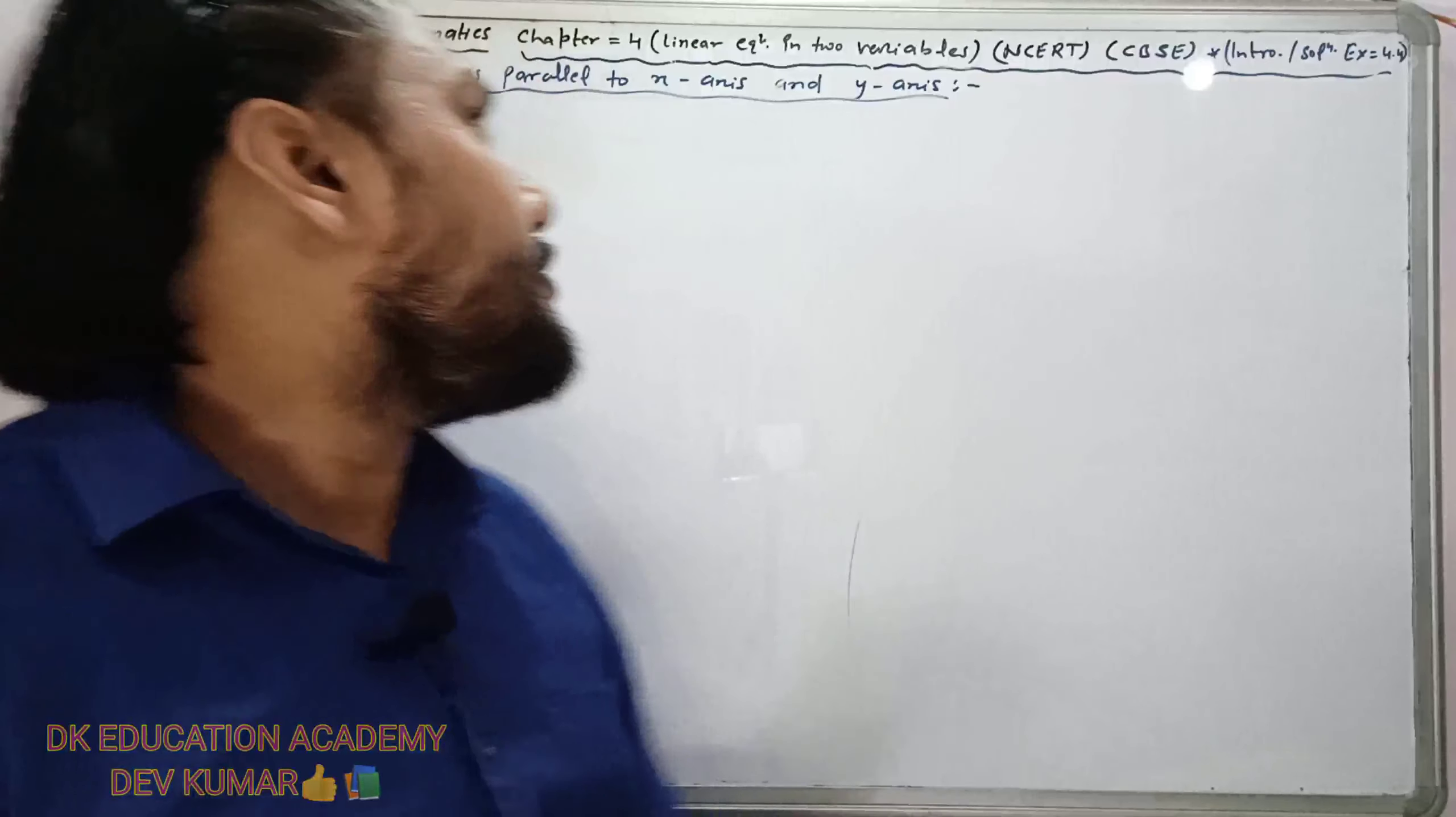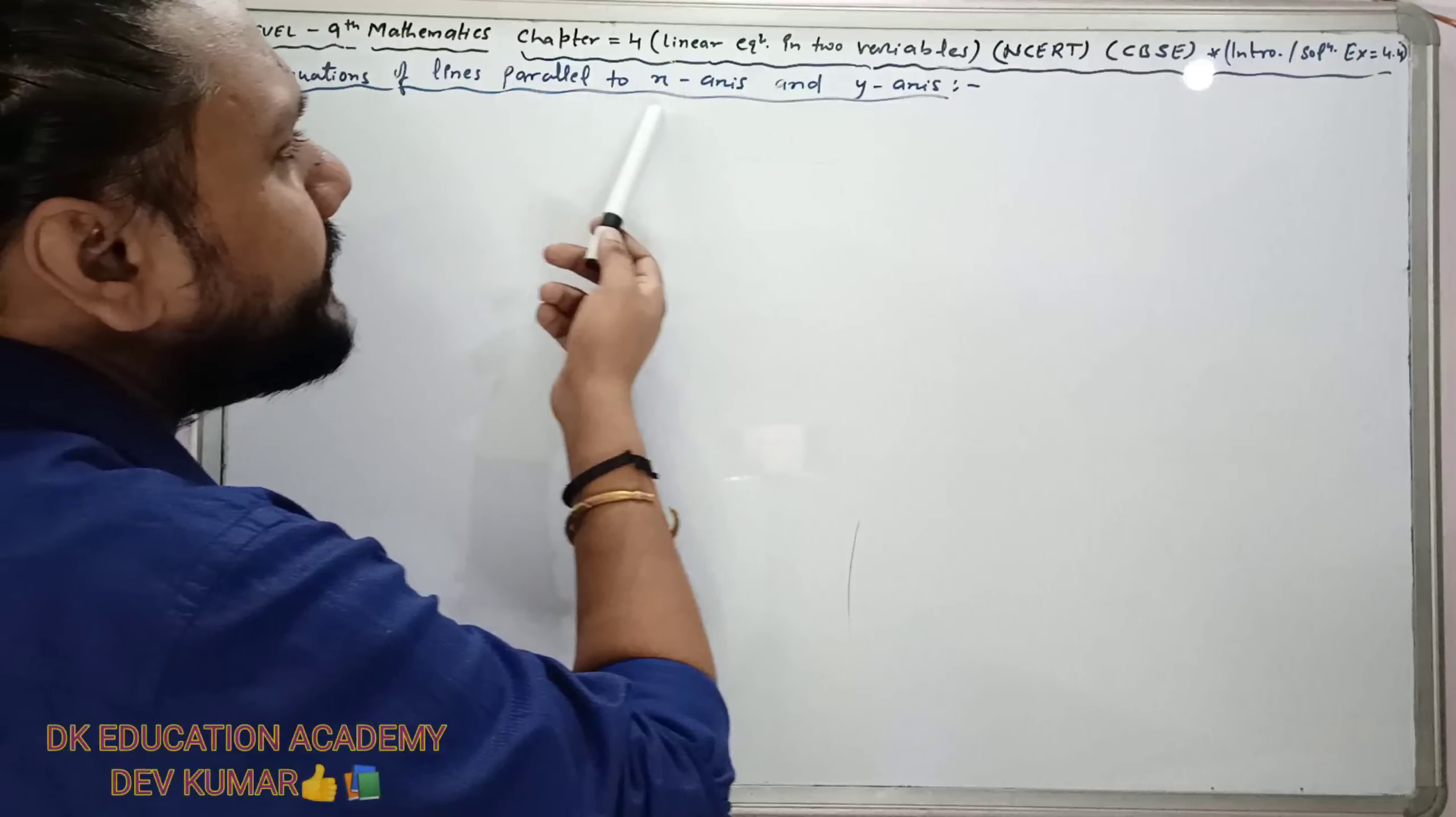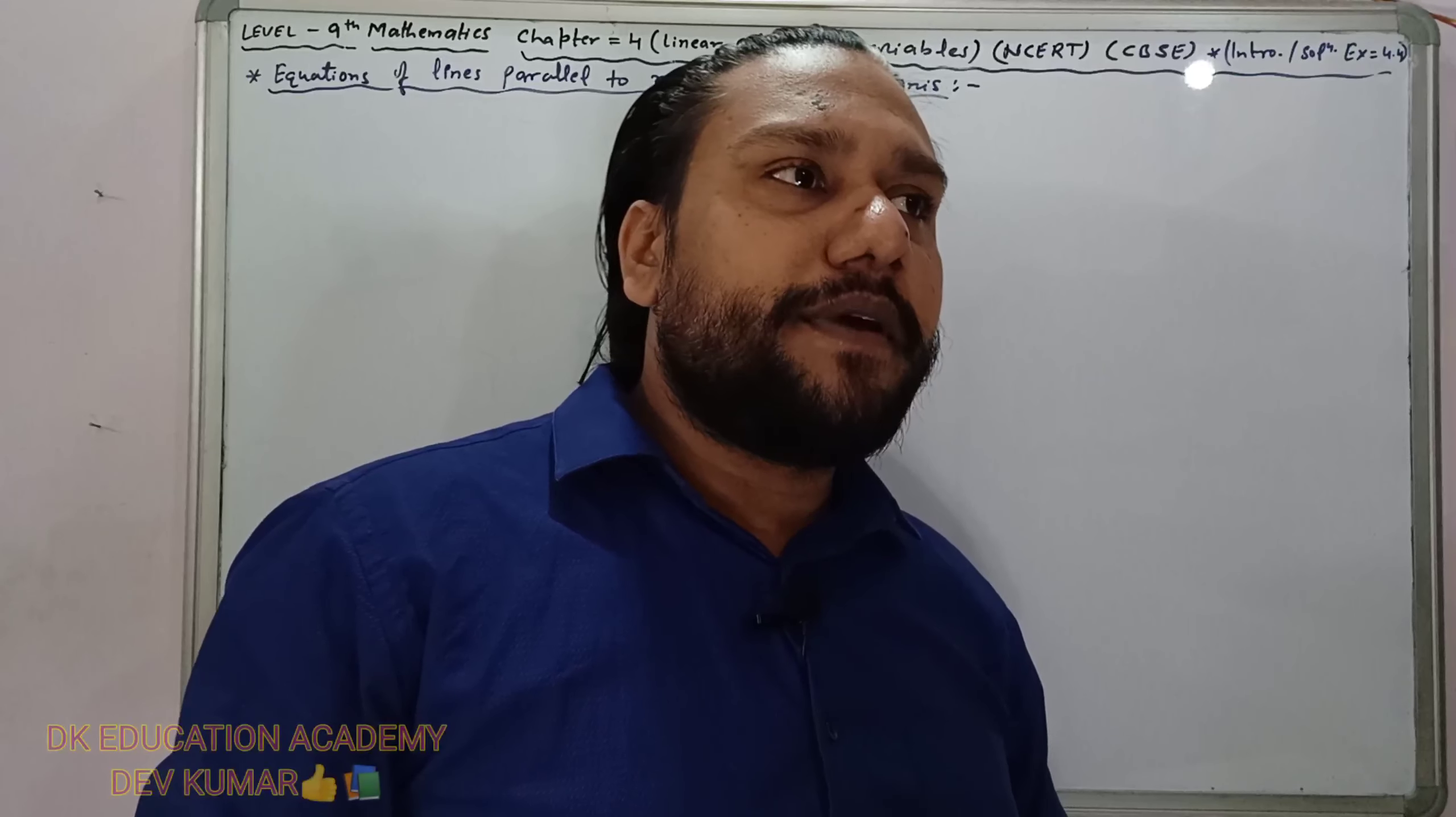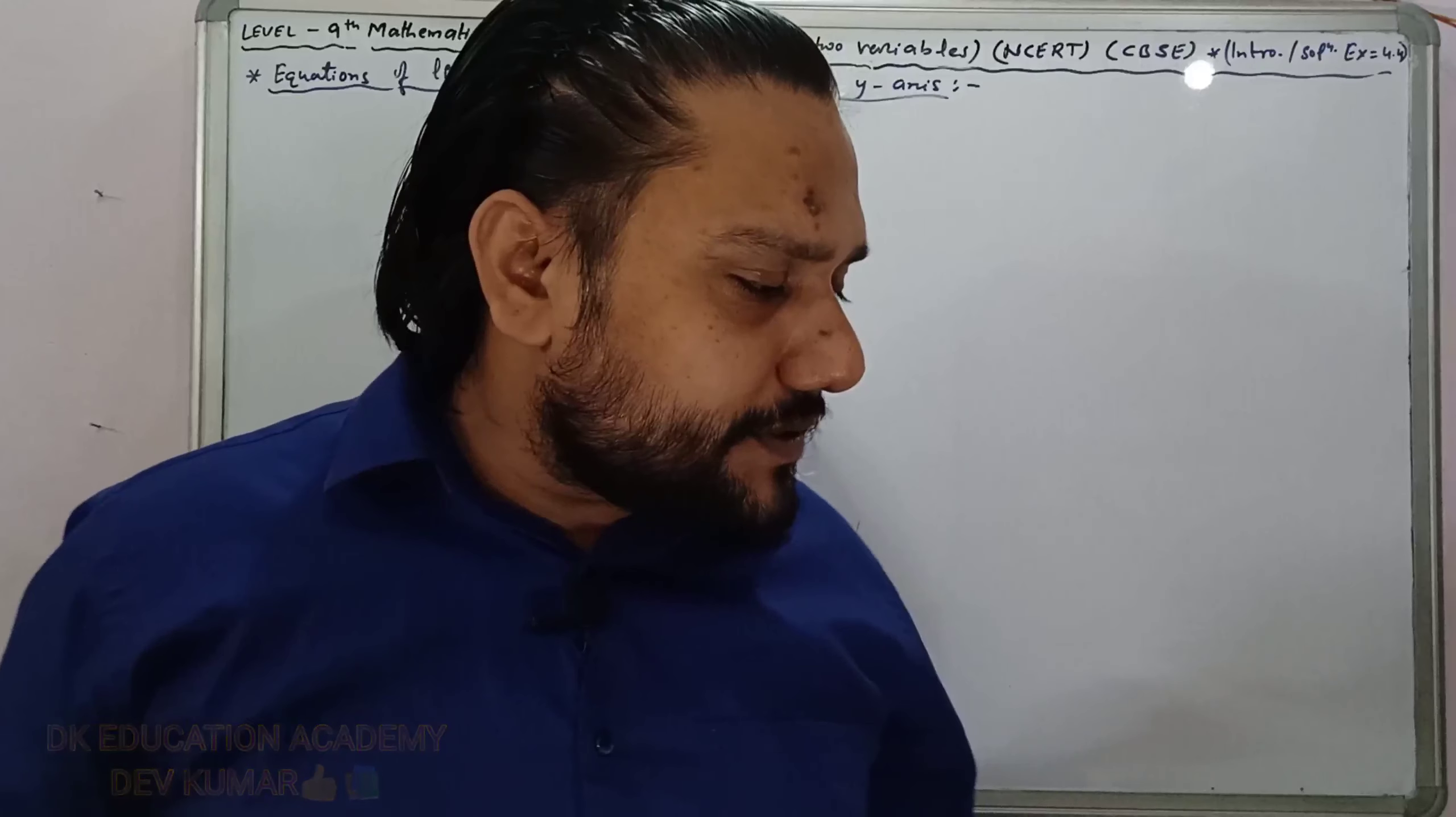This is Chapter 4, Linear Equations in Two Variables, Class 9th Mathematics. So let's start. The first topic is equations of lines parallel to X-axis and Y-axis. We have to study in this topic which is parallel to X-axis.